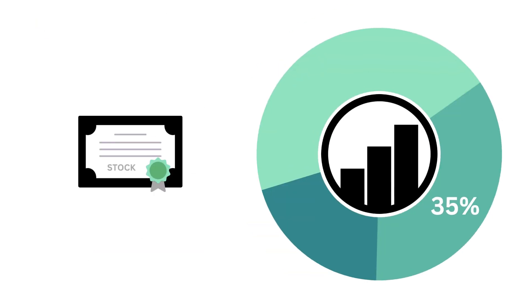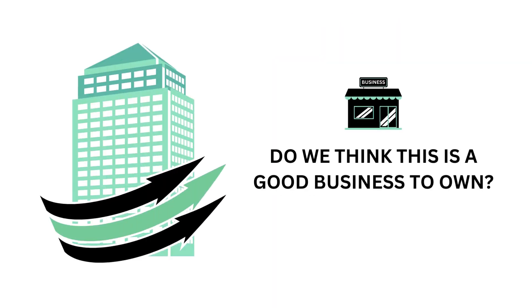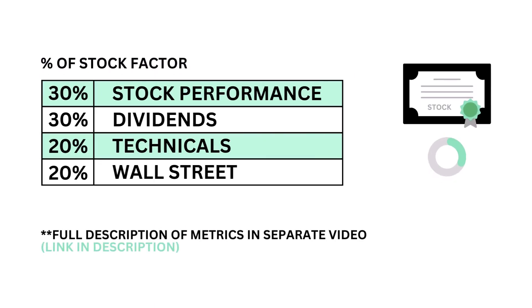Let's then look at the stock. The stock factor accounts for 35% of the analysis. The stock asks the question: will the company's stock perform well enough in the future to justify an investment? There are four metrics that make up the stock factor, from performance to Wall Street. Each are weighted based on importance to the price.